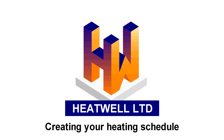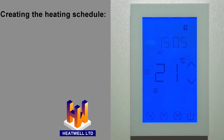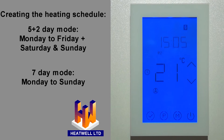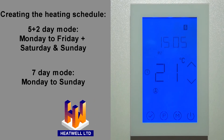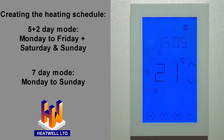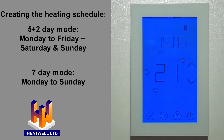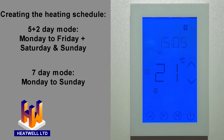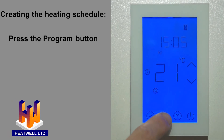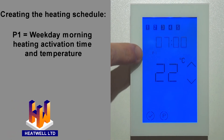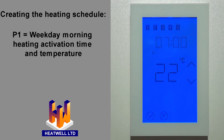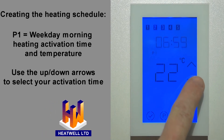Creating your underfloor heating schedule. The thermostat has two schedule options: 5 plus 2 day mode, which is the default setting, or 7 day mode. On 5 plus 2 day mode, you can choose heating temperatures and times for the 5 weekdays and different temperatures and times for the weekend. 7 day mode applies the same switch-on times and temperatures every day. Let's begin by programming the heating schedule for 5 plus 2 day mode. Start by pressing the program button. P1 will be displayed. P1 is your first activation time for your underfloor heating. In this case, we'll have the floor heating turn on at 6:30 every weekday morning by using the up and down arrows.